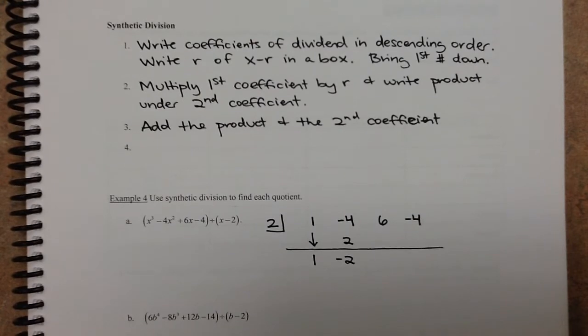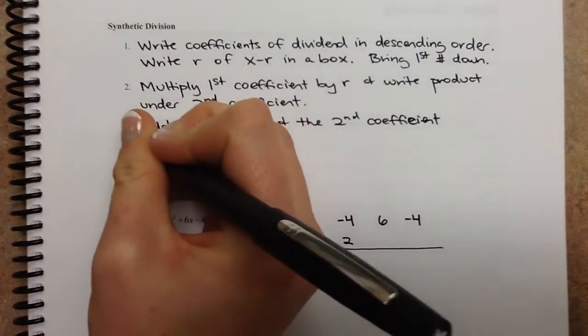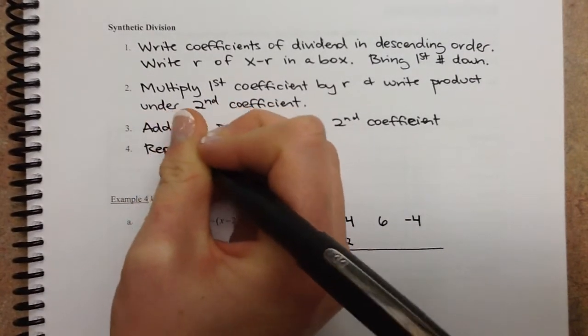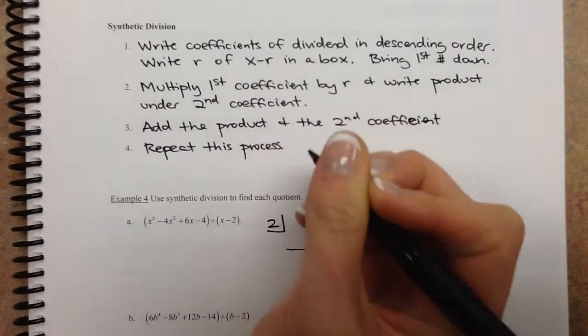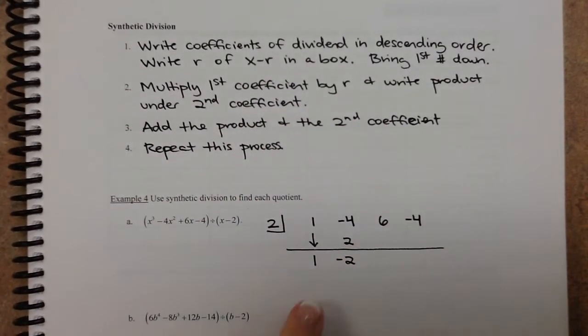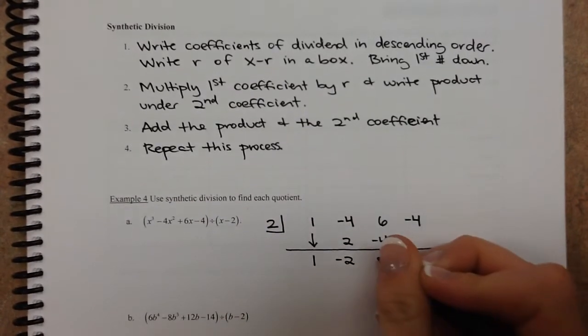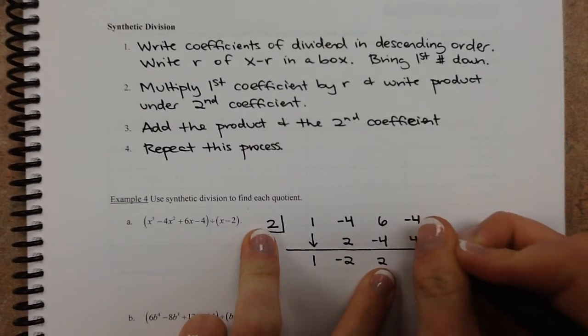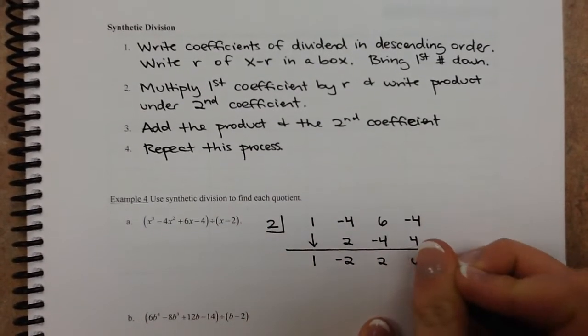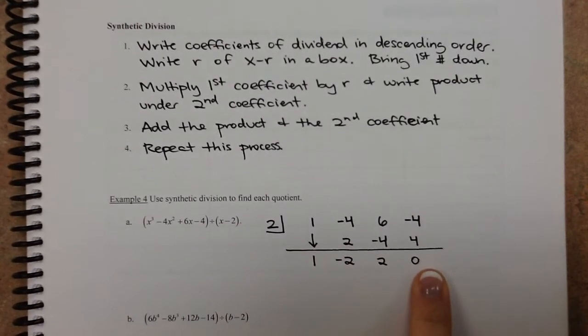And then you just repeat this process until you go all the way through. So repeat the process. So negative 2 times 2, we get negative 4, so we write that here. Then we add these two numbers together, and we get 2. 2 times 2 is 4. We add these numbers together, and we get 0. So the process repeats until we're done, until we reach this last column.